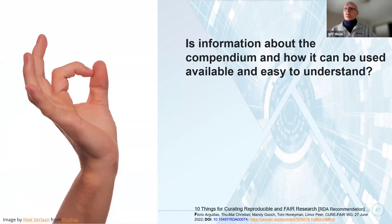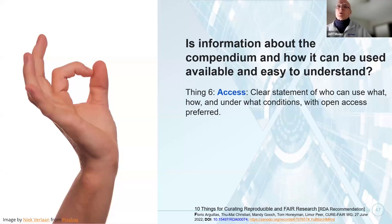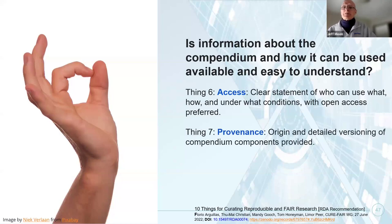Next: is descriptive information about the research compendium and its components available and easy to understand? This covers transparency — the compendium provides full disclosure of the research process that produced the scientific claim — and documentation, a recurring theme, where information describing the compendium objects is provided in enough detail to enable independent understanding and use.